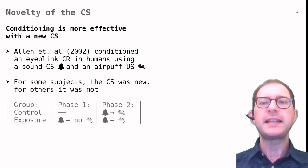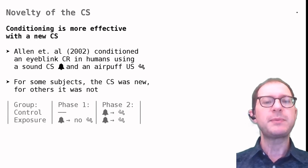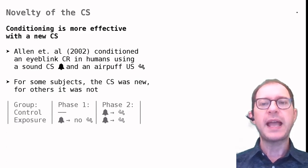The first finding is that animals learn more easily about stimuli that are new. We can see this in an experiment on rabbit eyeblink conditioning, performed by Allen and colleagues.